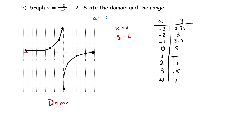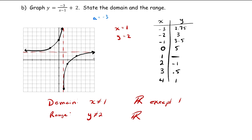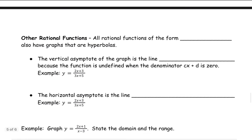So let's go ahead and state the domain and range for this function. The domain is where X does not equal 1 — so it's going to be all real numbers except 1. And for the range, Y cannot equal 2, so we would say it would be all real numbers except 2.